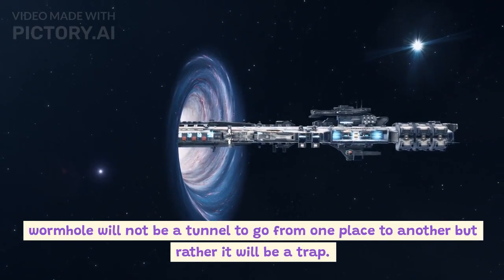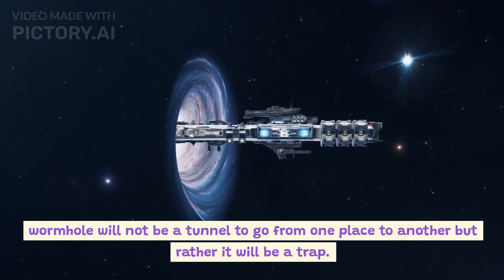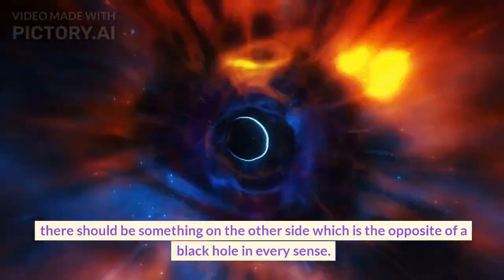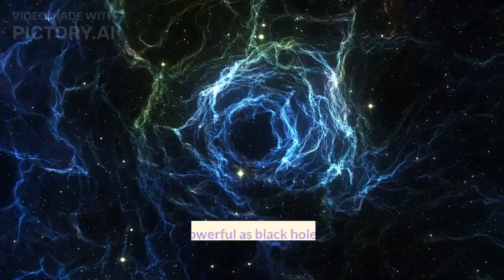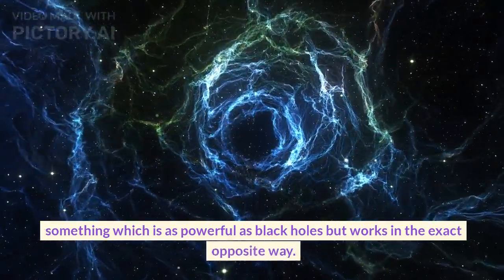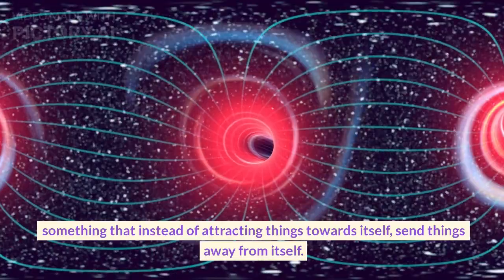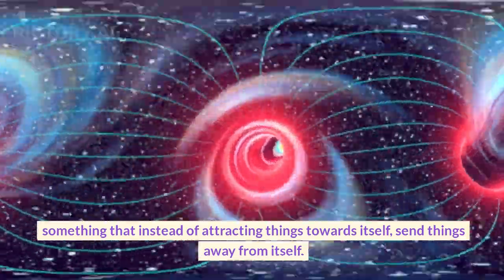A wormhole will not be a tunnel to go from one place to another, but rather it will be a trap. There should be something on the other side which is the opposite of a black hole in every sense—something which is as powerful as black holes but works in the exact opposite way.